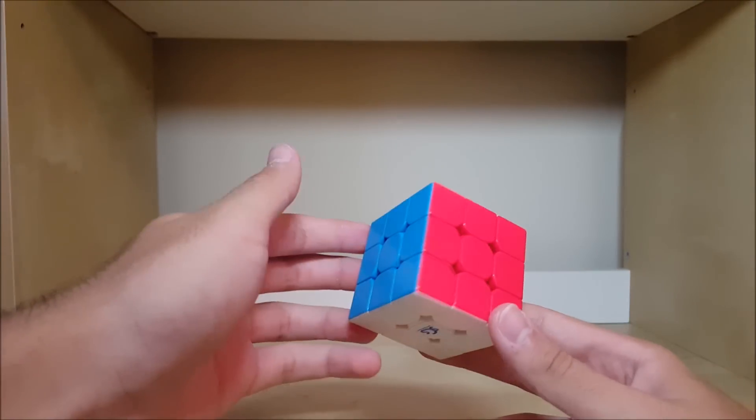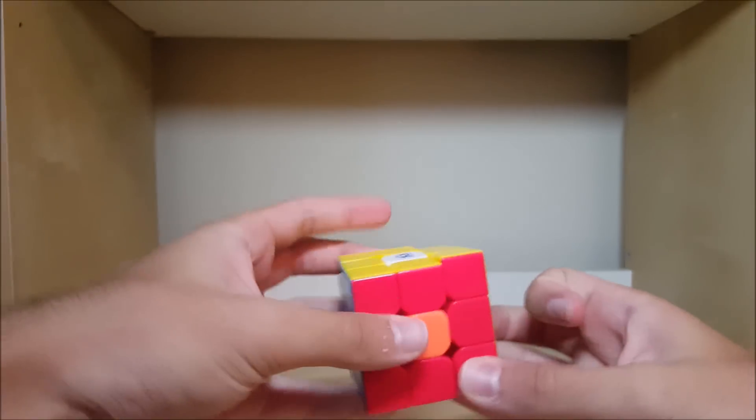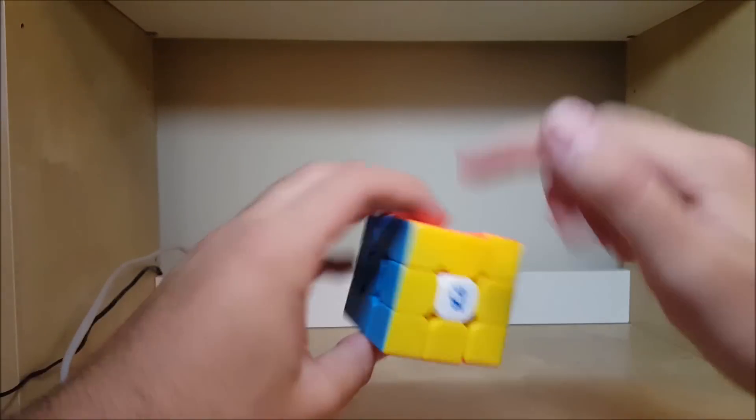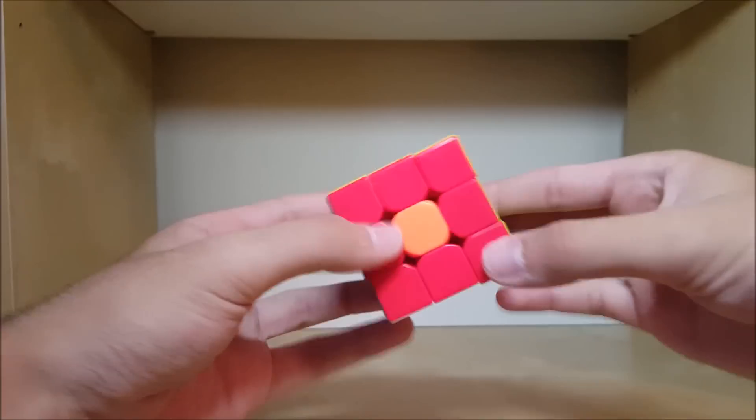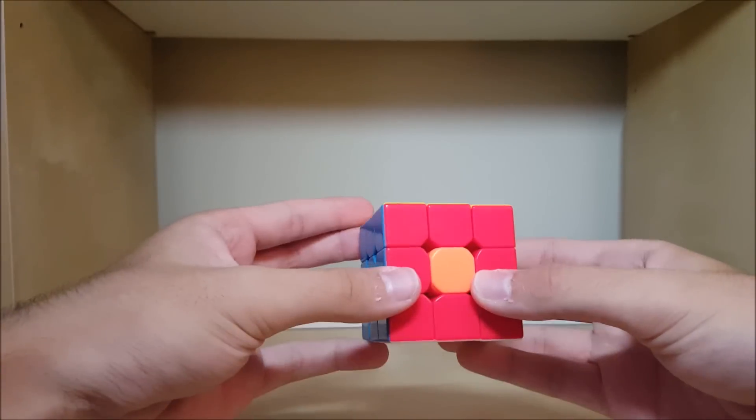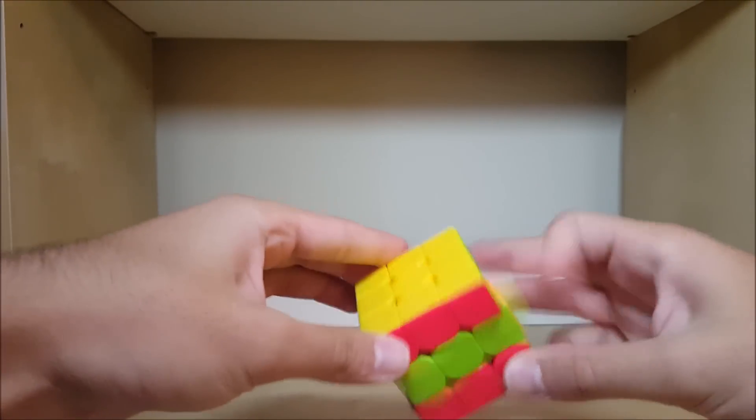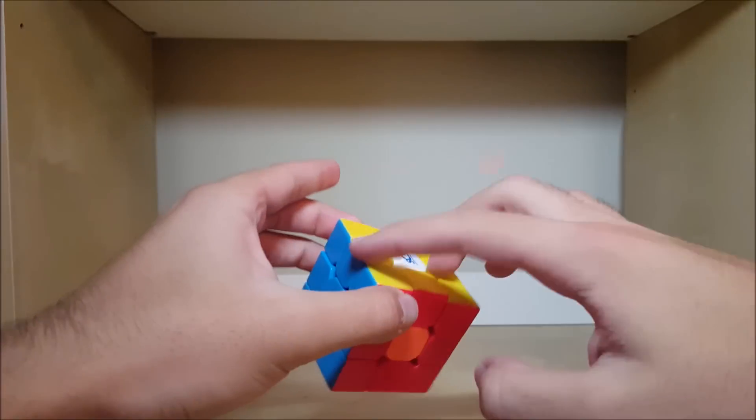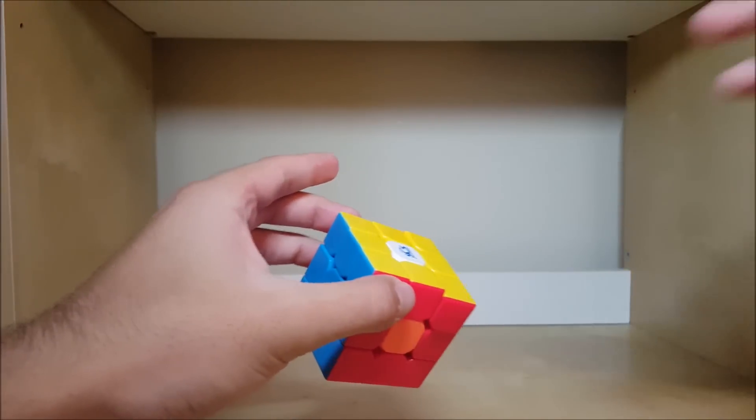So this is going to be a short video on how to skip dots. In case you don't know, dots is this case where the centers aren't solved in relation to the edges and it's the worst 4C case you can get. I'm going to show you how to avoid it while inserting the LR edges and actually get a 4C skip.